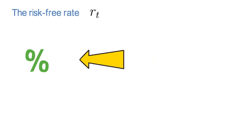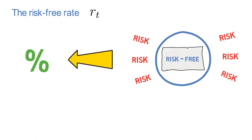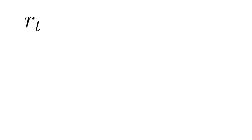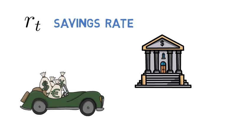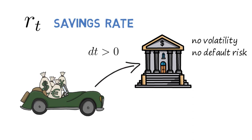The risk-free rate r_t is the value of interest that you earn from a risk-free investment for the investment horizon t to t plus dt. You can think of r_t as being the savings rate. If you want to park your money for an instant dt larger than zero and without any volatility or default risk, then r_t will be your certain payoff.